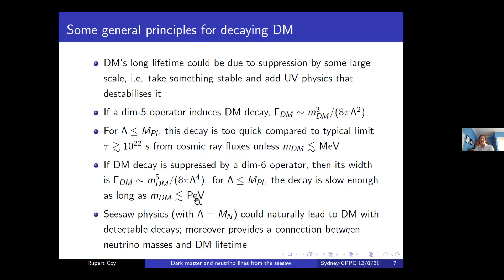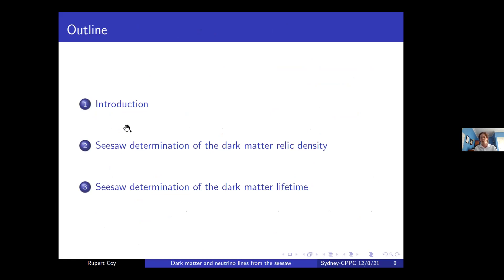A dimension-6 operator gives a rate ~ m_DM⁵ / Λ⁴, which provides sufficient suppression even for heavy dark matter given a large UV scale. With a seesaw scale of ~10¹⁵–10¹⁶ GeV, you naturally get very long-lived dark matter that decays into neutrinos. This connects the smallness of neutrino masses with the long lifetime of dark matter — a compelling scenario motivating the two projects.